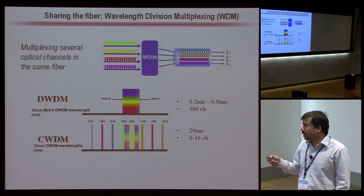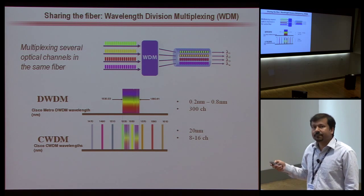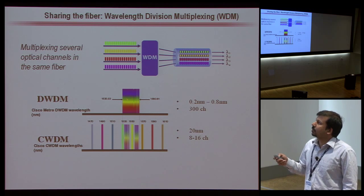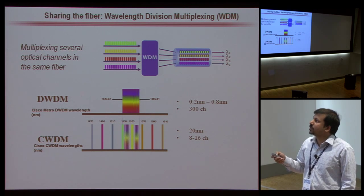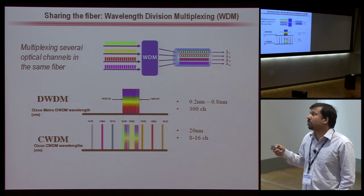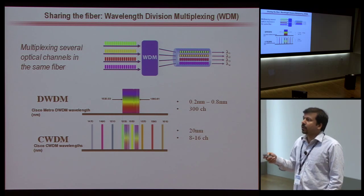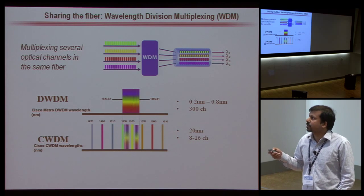There are two standards. One is called dense wavelength division multiplexing — you can use many optical channels densely packed in a single optical fiber using a DWDM module. The channel spacing can vary from 0.2 nanometer to 0.8 nanometer, so you can have around 300 channels in a single fiber. Or in coarse WDM, you can have only a few channels because the spacing is 20 nanometers.